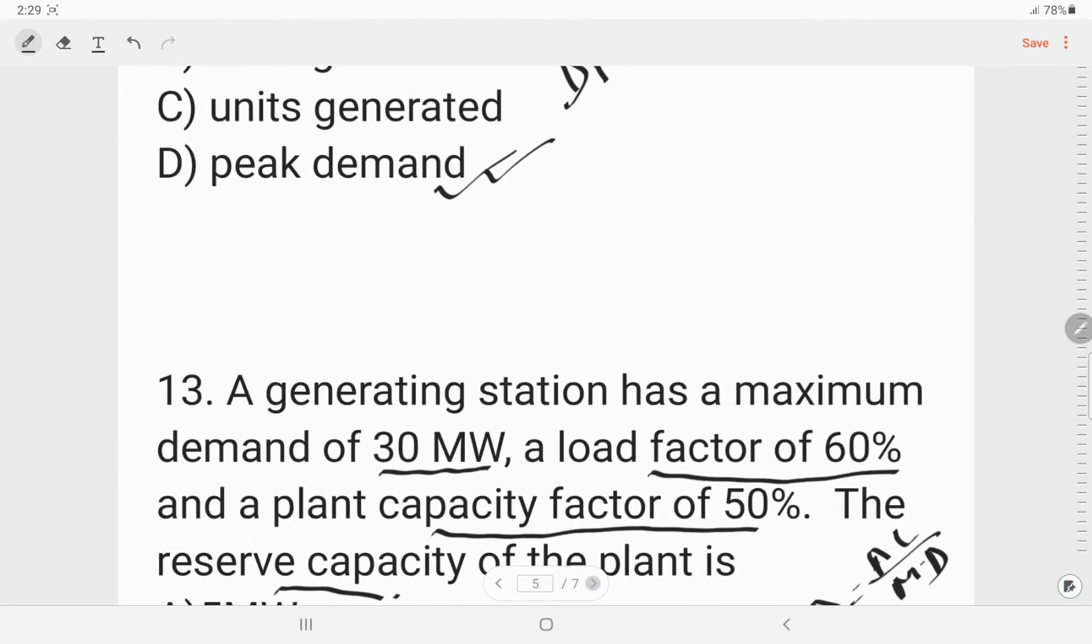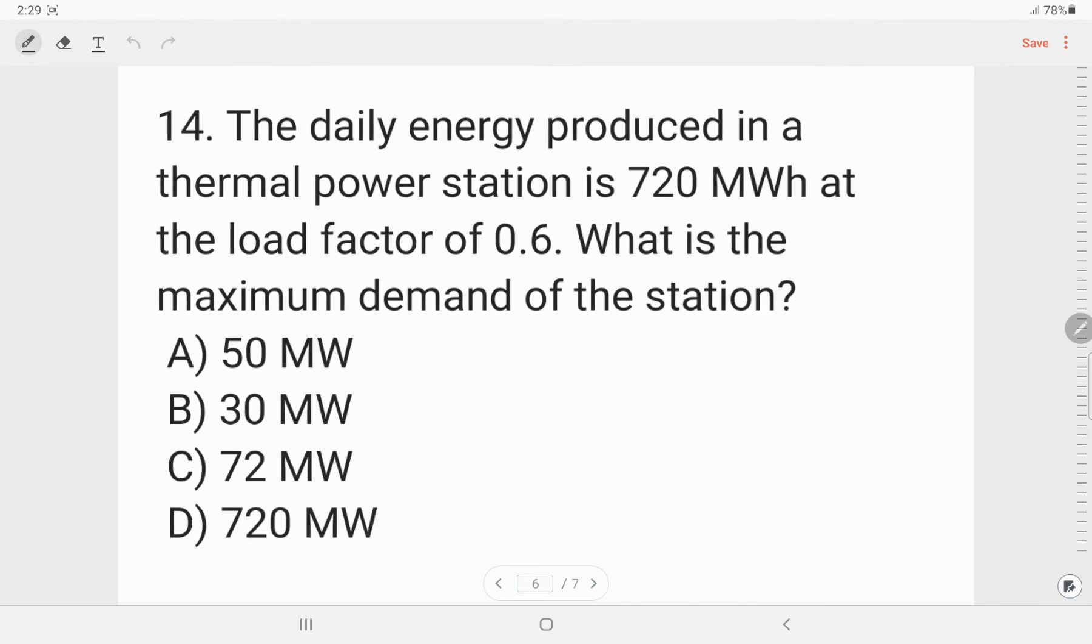Next question. The daily energy produced in a thermal power station is 720 megawatt hour at the load factor of 0.6. What is the maximum demand? So maximum demand will be average load. How much is it given? 720 megawatt for 24 hours divided by 24 into load factor that is 0.6. So if we divide this it will be 50 megawatt is the correct answer.